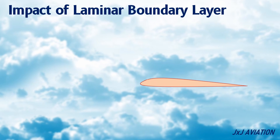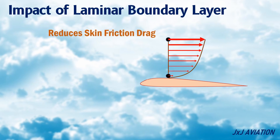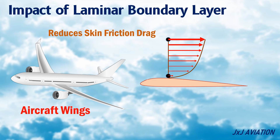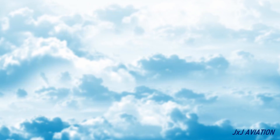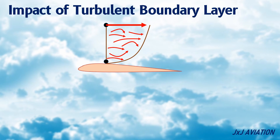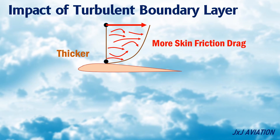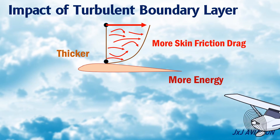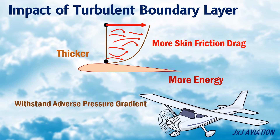A turbulent boundary layer reduces the skin friction drag. The wings of an aircraft try to maintain a laminar boundary layer to improve the aerodynamic efficiency of the wing. A turbulent boundary layer is thicker and causes more skin friction drag, but a turbulent boundary layer carries more energy. This means it can withstand an adverse pressure gradient longer than a laminar boundary layer.